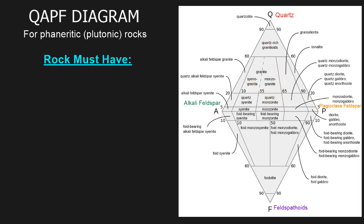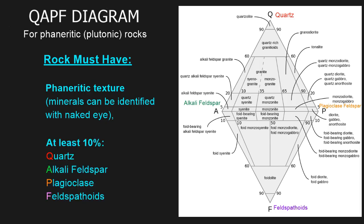So there's a couple stipulations we need to outline before we know we can actually use this particular diagram. Remember, this is the diagram for a phaneritic rock or plutonic rock. So first, the rock must have a phaneritic texture, which means the minerals can be identified with the naked eye. It also must contain at least 10% quartz, alkali feldspar, plagioclase, or feldspathoids.